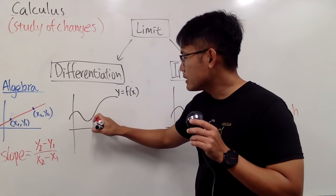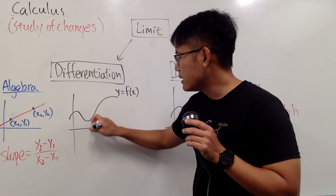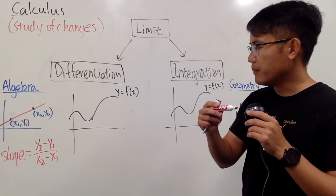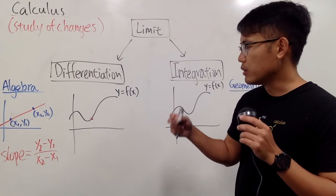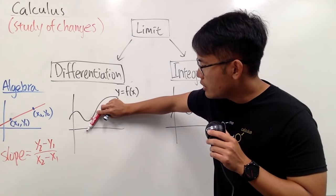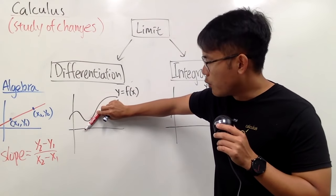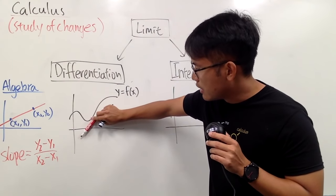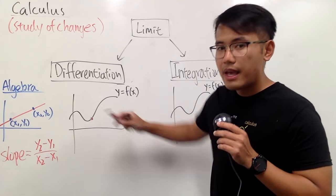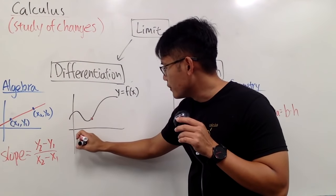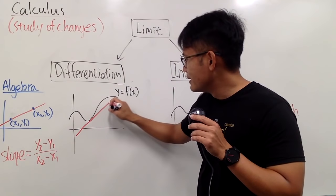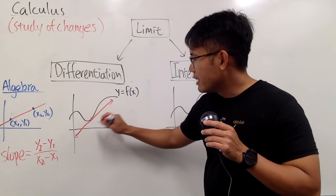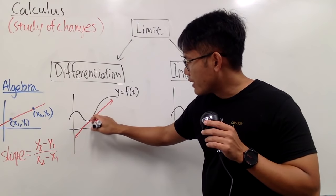What we are going to do is suppose I pick a point on the curve. We are going to bring a straight edge, or maybe a ruler, and just gently touch the curve to form a tangent line. It's just a line that touches the graph right here. So this straight line touches this curve at this point.